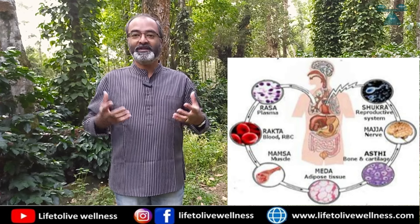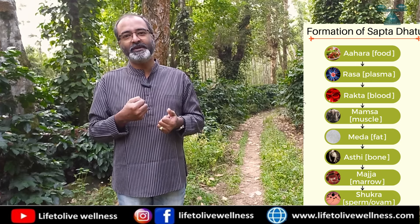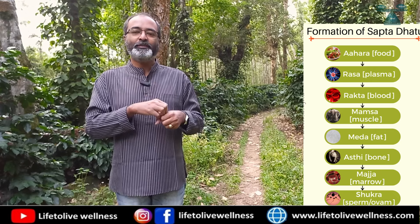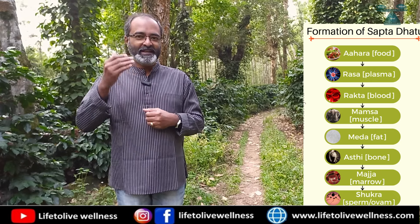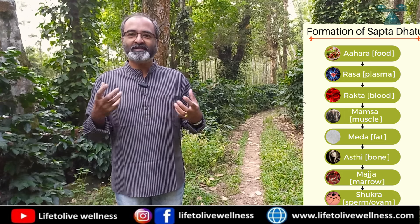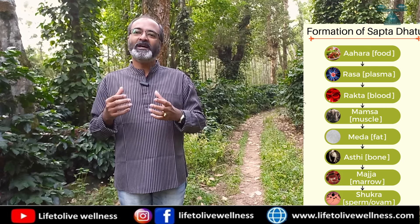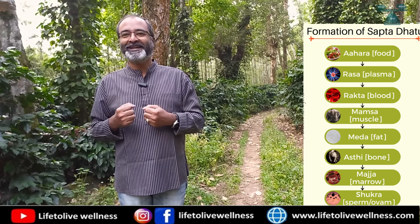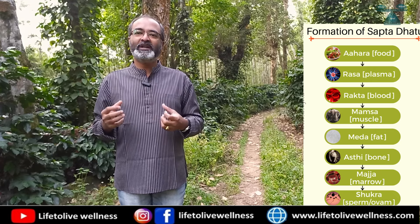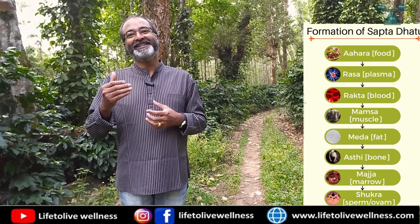There are seven dhatus, or tissue systems, in the body as per Ayurveda, and they play a vital role in building physical strength. The first is rasa, or plasma — when food is digested, it first absorbs key energies for nourishment and action. Next is rakta, or blood, which absorbs ingredients to build white cells, red cells, and hemoglobin. Then mamsa, or muscle, helps build all muscular strength. The fourth is meda, or fat, which builds the fat system — fat is not bad; it protects and stores energy in the body.